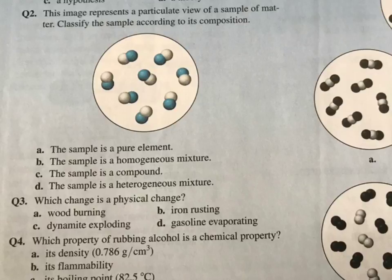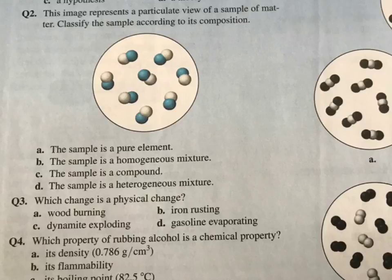Given the question: this image represents a particular view of a sample of matter — classify the sample according to its composition. As we can see, it has two elements, and they are chemically bonded together — either ionic or covalent. Since it has two different elements bonded together, that means it has to be a compound.